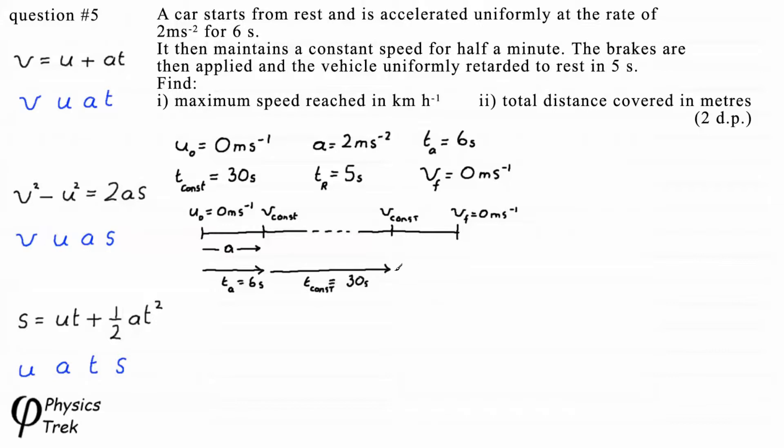And the time for retardation tᵣ is 5 seconds, the retardation being Aᵣ. The first part of the question asks for the maximum speed in kilometers per hour. This speed, we've called it V_const, is achieved after six seconds. Maximum speed V_const is at the end of six seconds.